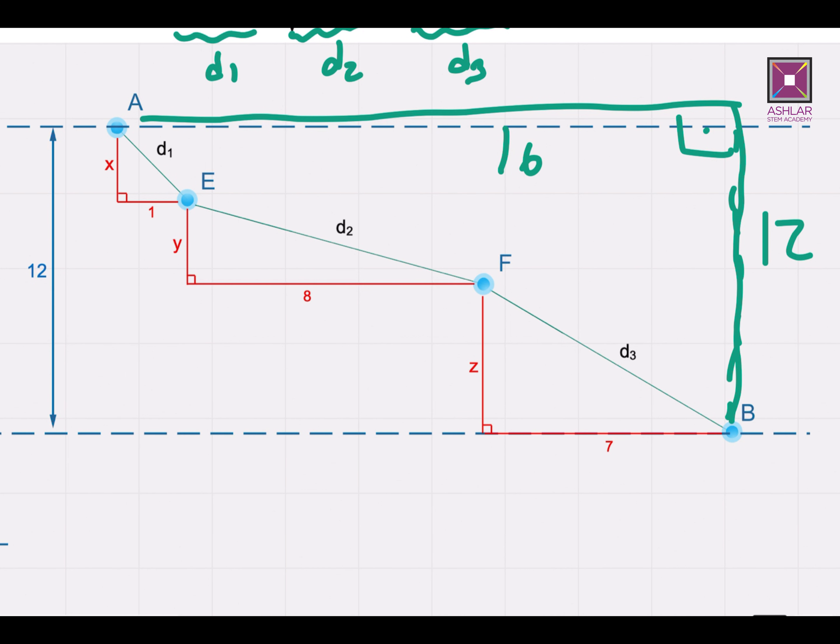So now I'm trying to minimize the total distance traveled. Now comes the question, what is the minimum distance or the shortest distance between two points on a plane? The answer is a straight line.